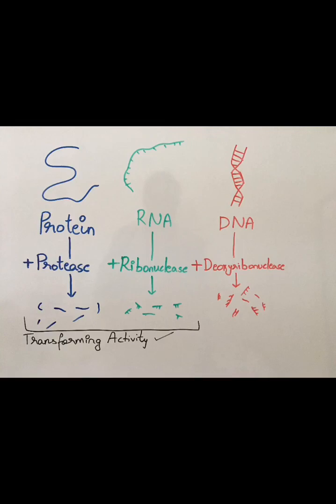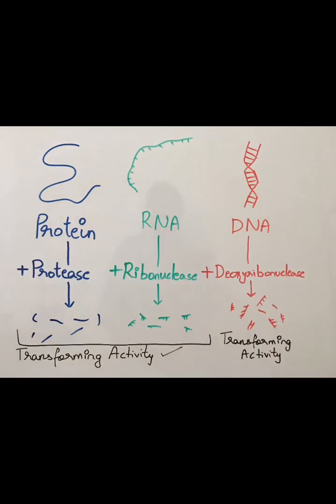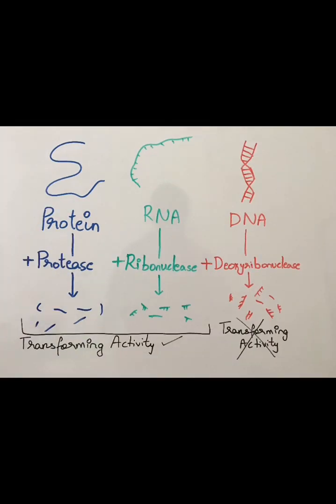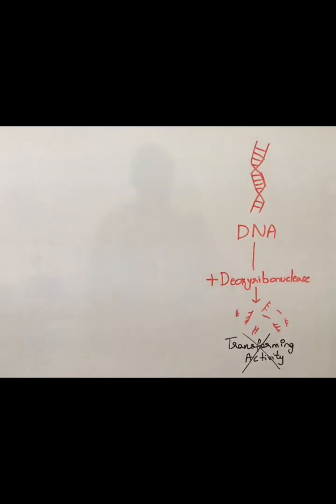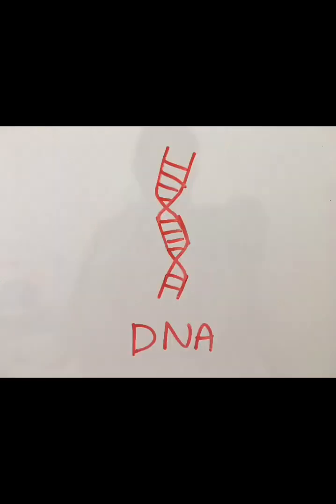Addition of deoxyribonuclease caused the DNA to degrade, and thus the transforming activity was also hindered. This showed that the genetic material was not protein or RNA, but actually DNA.